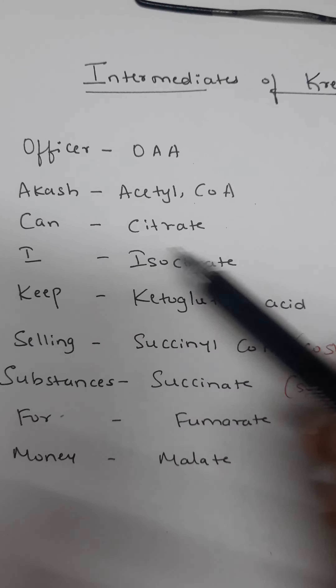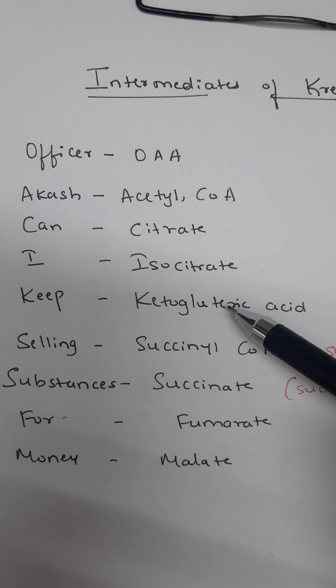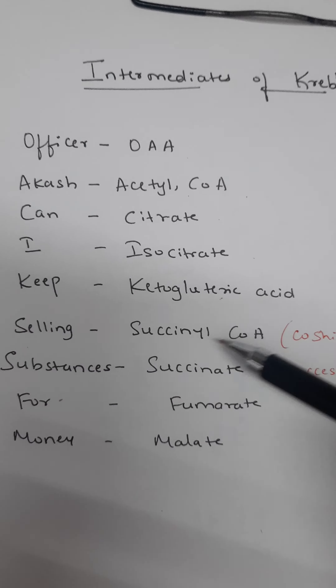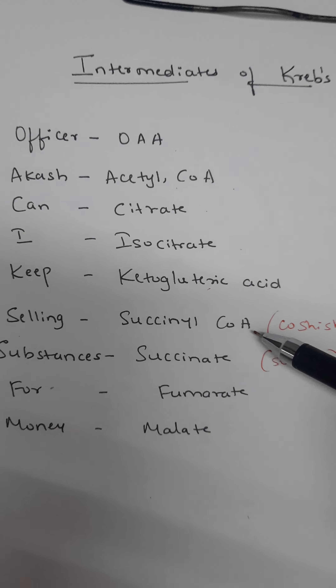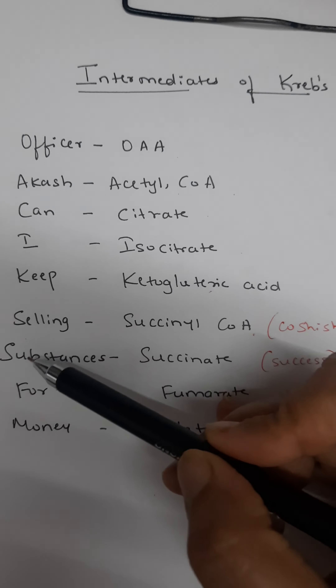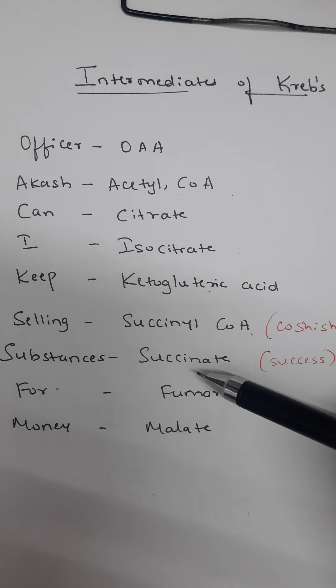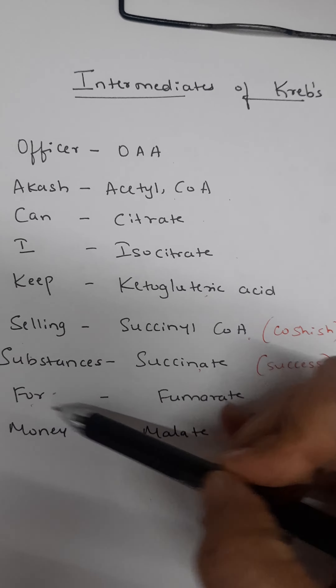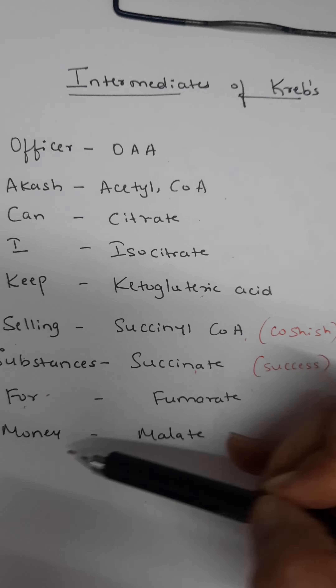I is for isocitrate, K is for ketoglutaric acid, S is for succinyl coenzyme A, another S is for succinate, F is for fumarate, and M is for malate.